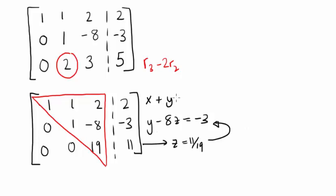From the first equation, we have x plus y plus 2z equals 2. And the results for z and y from these two equations can be used to get x.